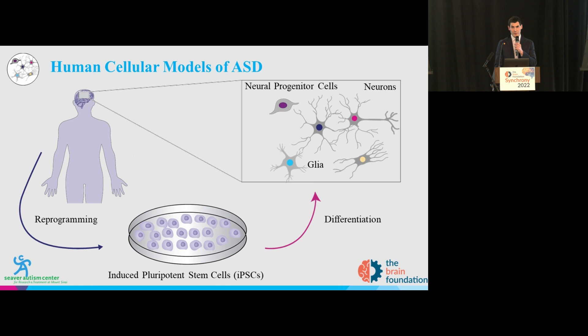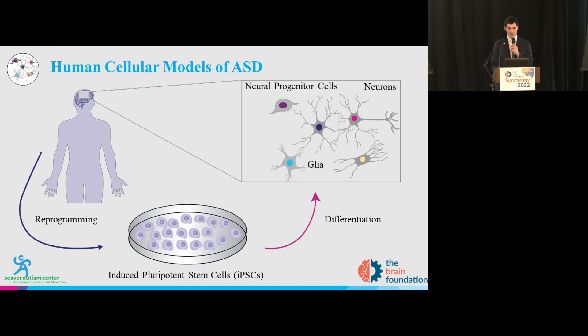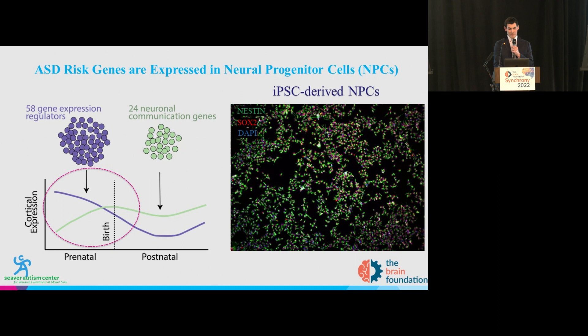We also know a lot about the cell types that are implicated in autism, including neural progenitor cells, neurons, and the supporting cells of the brain called glia. To study all of these autism risk genes, we need to be able to generate these cell types. But we largely lack access to the human brain, much less the developing human brain.